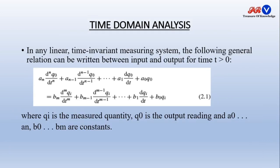In previous slides, we studied that a linear time invariant measuring system is described by this differential equation. It is a constant coefficient differential equation and initial conditions are assumed to be 0 to work this equation in the LTI domain. Here, k·ui is the measured quantity and k·u0 is the output reading, and the other constants a0 and bm are constants.